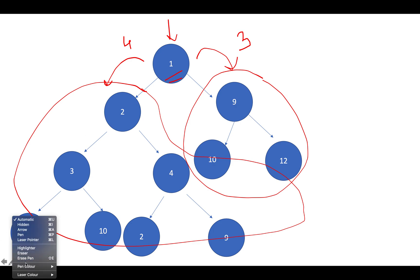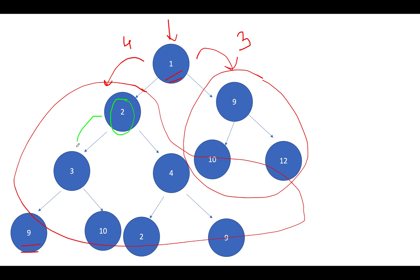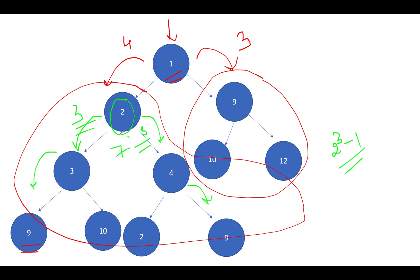When there is a mismatch, we can't use the formula, so we recurse: total nodes = 1 + nodes in left subtree + nodes in right subtree. Going one level deeper into the left subtree, we find the height of its leftmost leaf node is three and the height of its rightmost leaf node is also three — a match. This means the subtree is a perfectly aligned binary tree, so we can use the formula: 2^3 − 1 = 7.